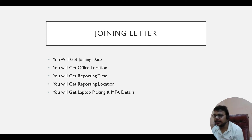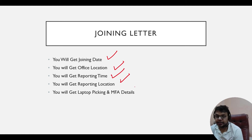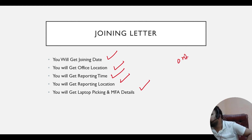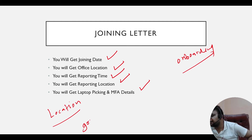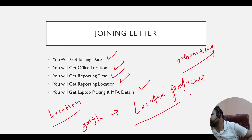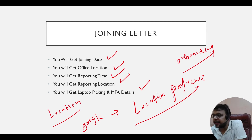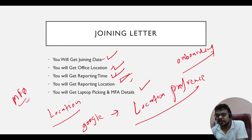Next is the joining letter. In the joining letter, you will get your joining date, office location, reporting time, reporting location, and laptop picking and MFA details. Basically, when you have to onboard, you will get this onboarding letter. Before that, you will get a Google Form in which you will submit your location preference.